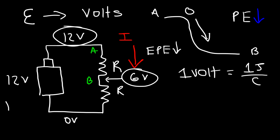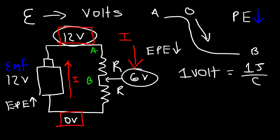The battery does work on the charges. Notice that inside the battery, current flows from low potential to high potential — that tells us the battery is doing work on the charges, increasing their electric potential energy. That's what an EMF does: it increases the electric potential of the charges and raises their electric potential energy. A resistor, which consumes energy, decreases the electric potential energy of the charges.